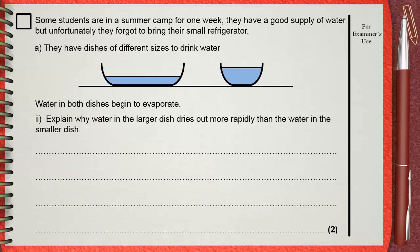Question double I. Explain why water in the larger dish dries out more rapidly than the water in the smaller dish.